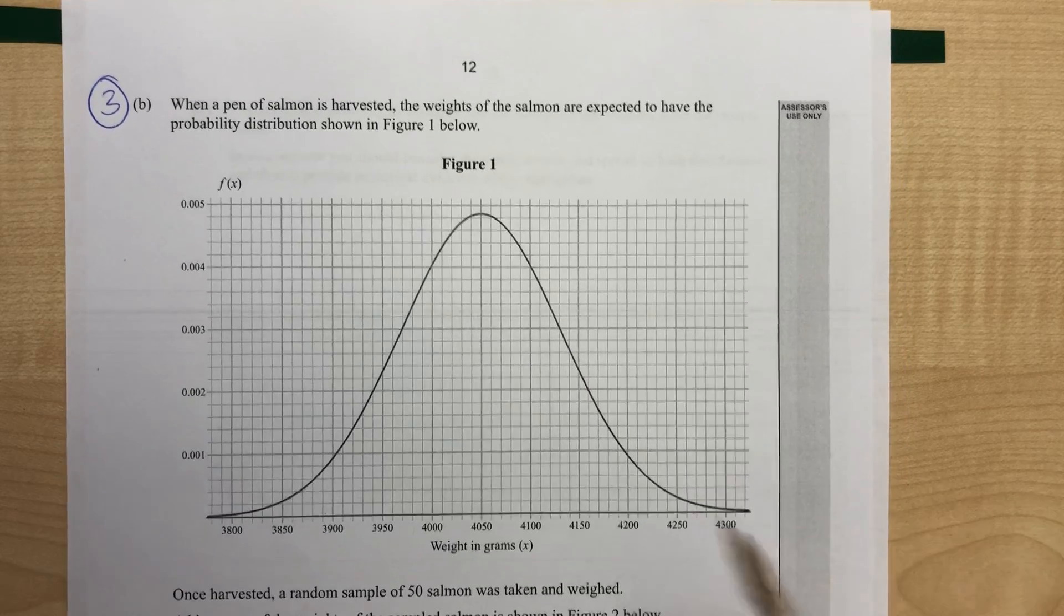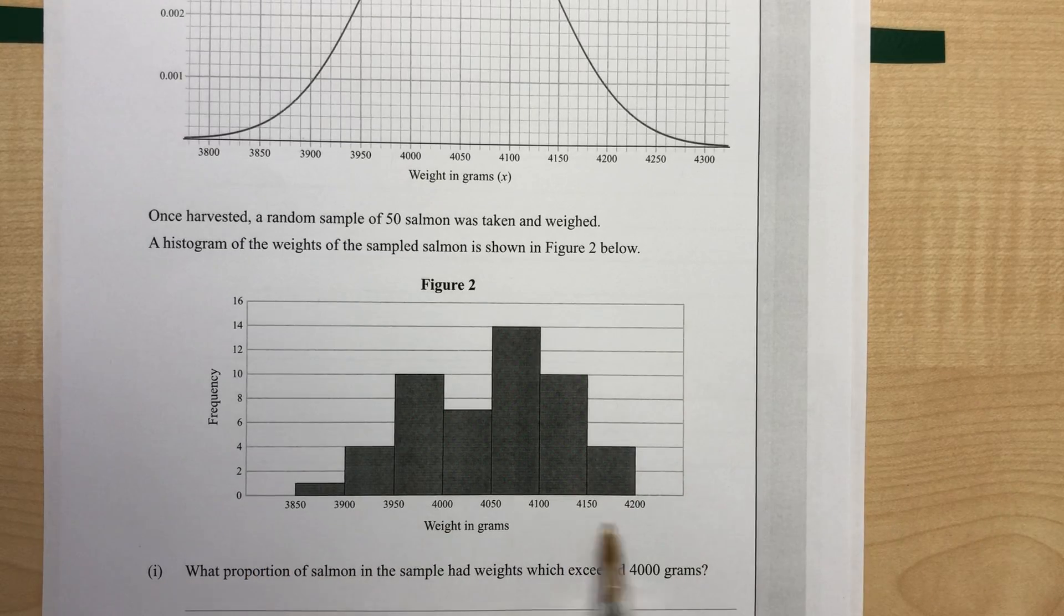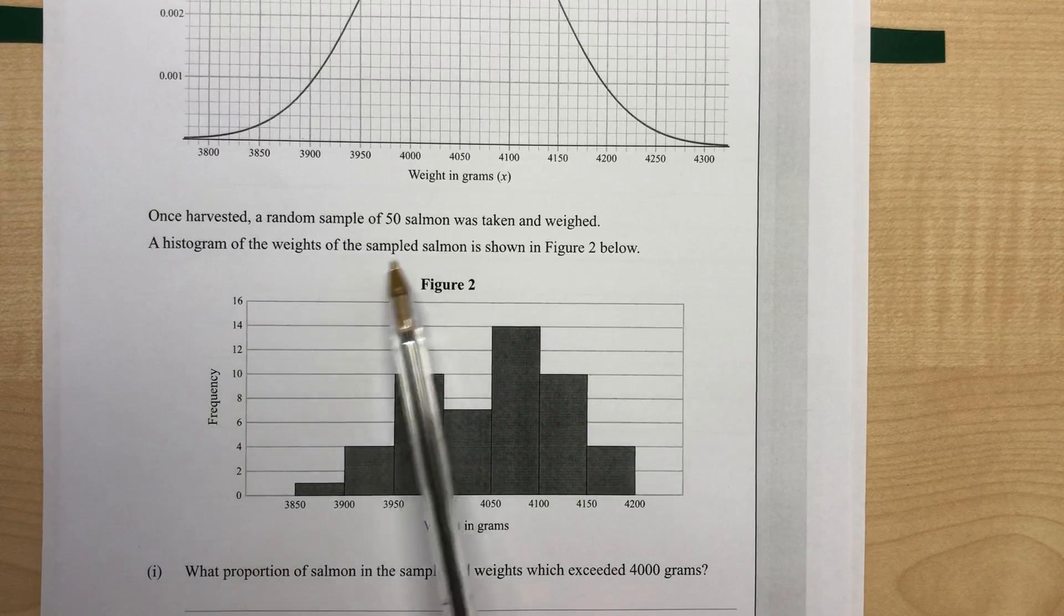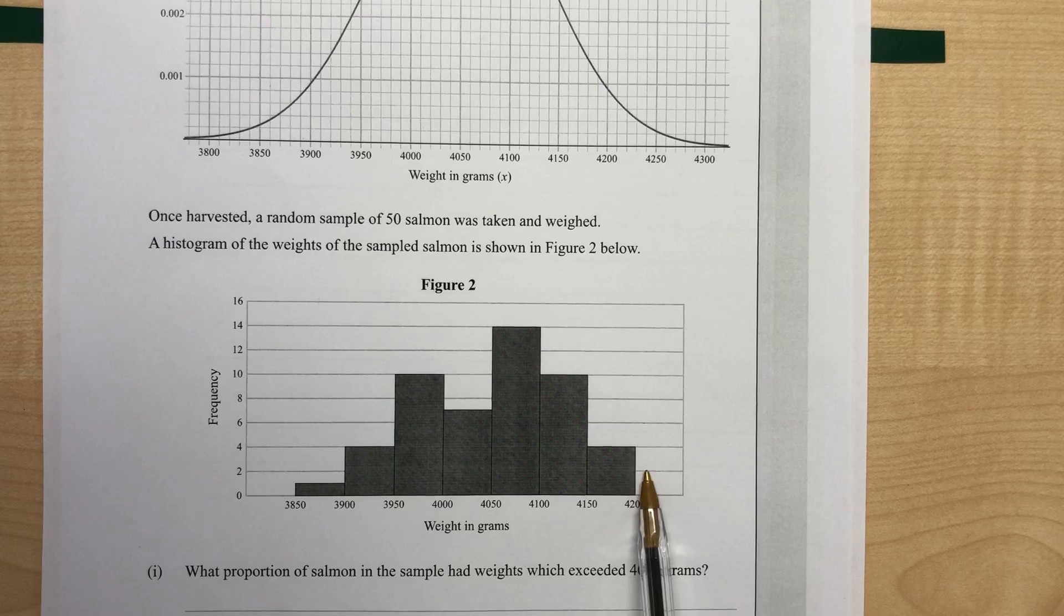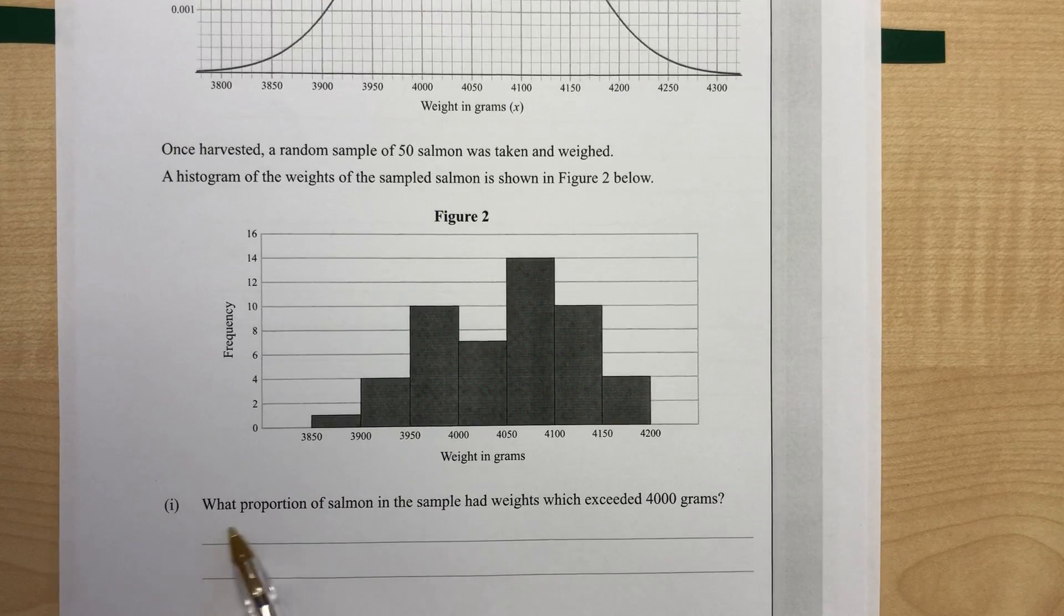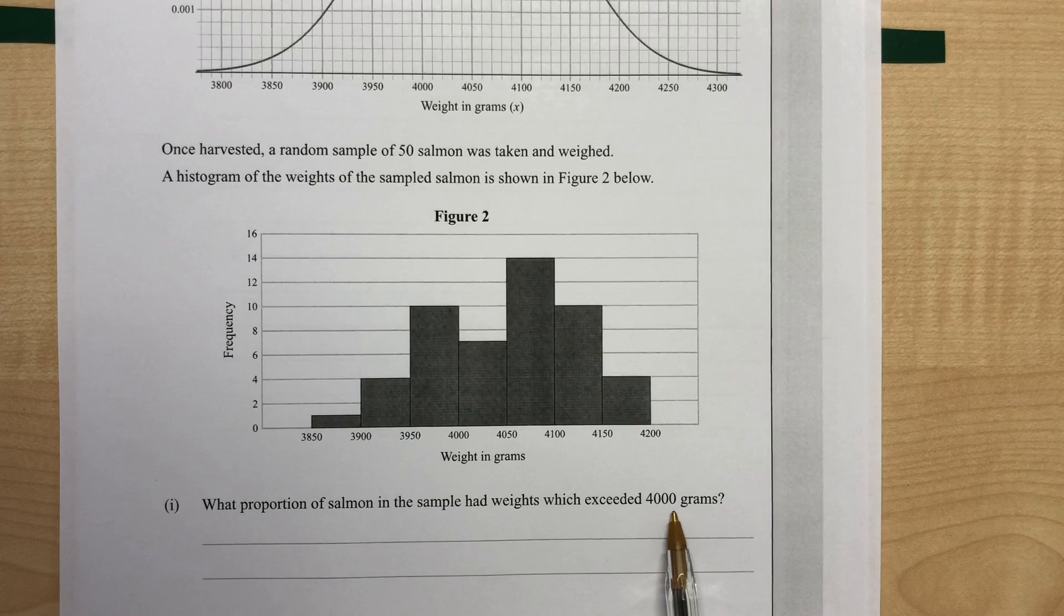So we have this normal distribution curve which could be used to model this distribution here. So this was the sample of 50 salmon, and these are their weights shown in this histogram. So our first question here is, what proportion of salmon in the sample had weights that exceeded 4,000 grams?